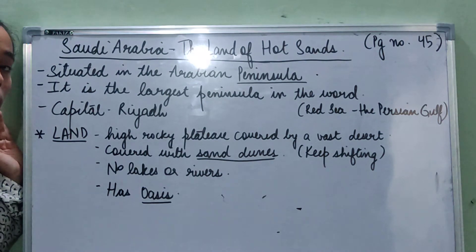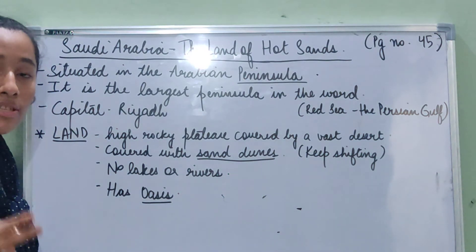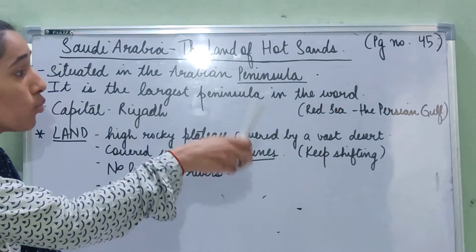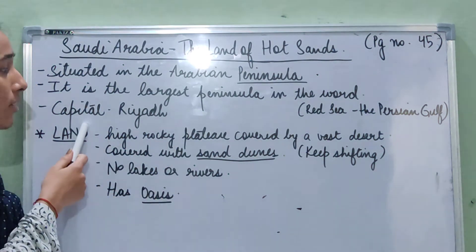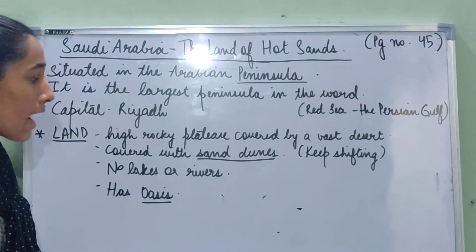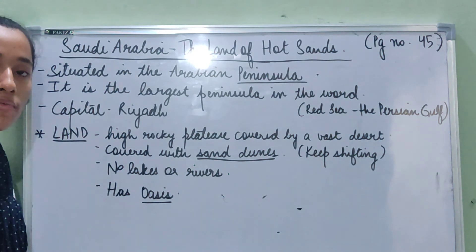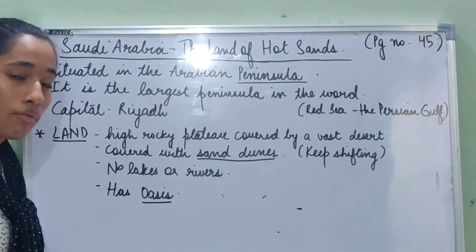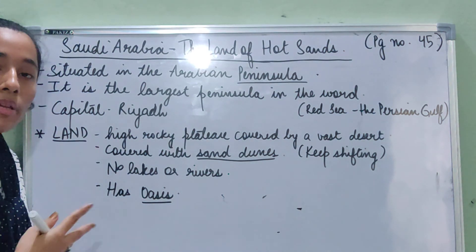To summarize what we learnt today: Saudi Arabia is situated in the Arabian Peninsula. A peninsula is a piece of land jutting out into the sea, surrounded by water on three sides. The Arabian Peninsula is the largest peninsula in the world, surrounded by the Red Sea in the west and the Persian Gulf in the east. The capital is Riyadh. The land is mostly a high rocky plateau covered by a vast desert with sand dunes — small hills of sand that keep shifting due to strong winds. There are no lakes or rivers, but oasis exist where underground water comes to the surface forming fertile land.